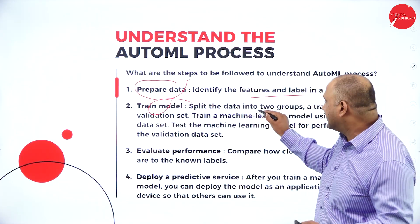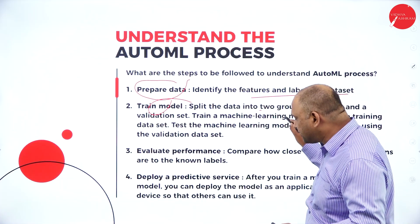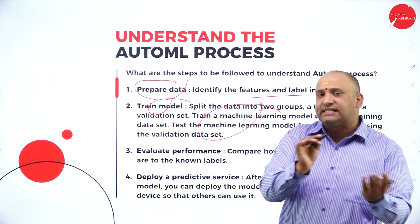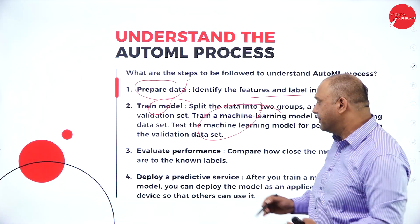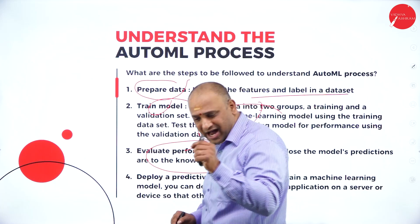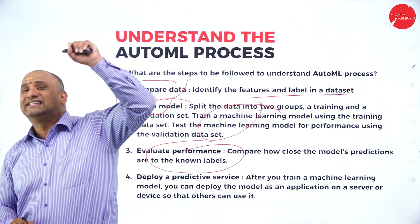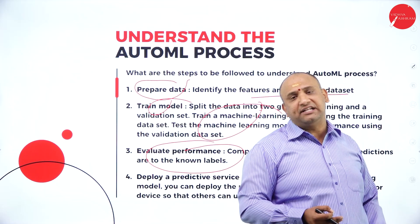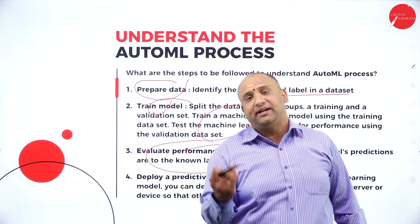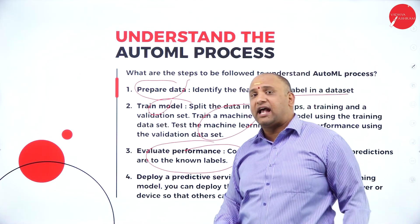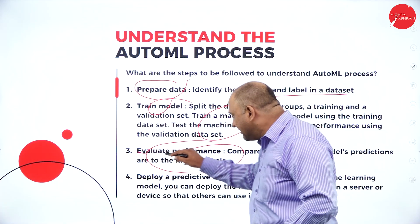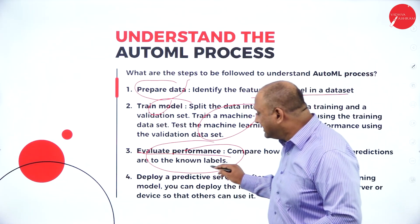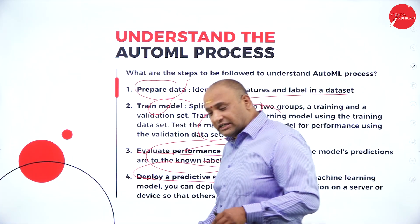You first train the machine learning system, then test the machine with the validation data to find out whether the results from training match the outcome. Evaluating performance is very important — you must check whether the results are exact. Often the results differ between a test data environment and an actual data environment, so evaluating performance helps determine where the labels are working correctly. After evaluation, we deploy a predictive service.